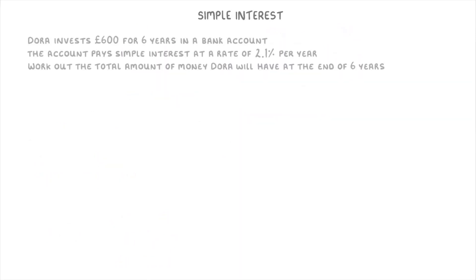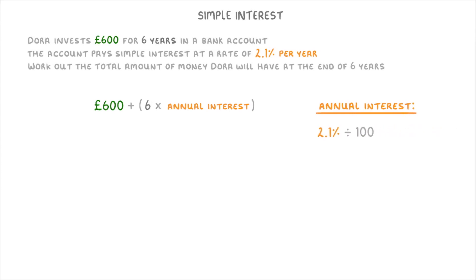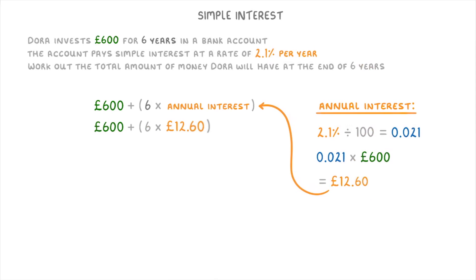Let's try another one — give the video a pause if you want to give it a go first. In this question, we're told that Dora invests £600 for 6 years in a bank account, and that the account pays simple interest at a rate of 2.1% per year. Our job is to work out the total amount of money she'll have at the end of 6 years. We take the £600 original investment, because you'll get that back at the end, and add 6 years' worth of annual interest. We convert 2.1% to a decimal by dividing by 100, giving 0.021, then multiply by £600, which gives £12.60 of interest each year. So we get £600 plus 6 times £12.60, which simplifies to £600 plus £75.60, giving a total of £675.60.